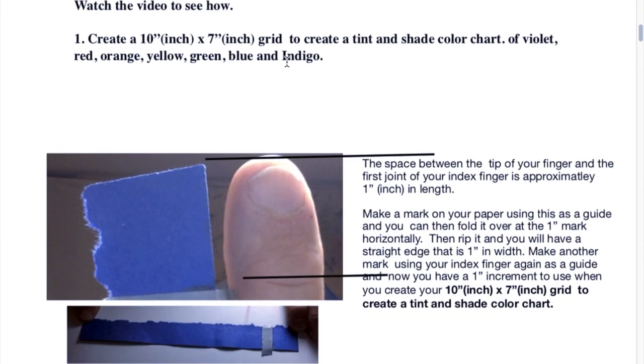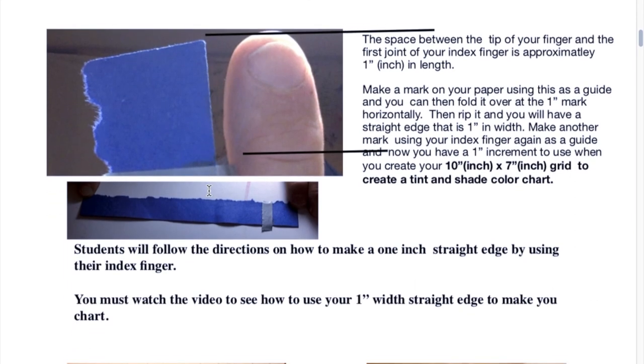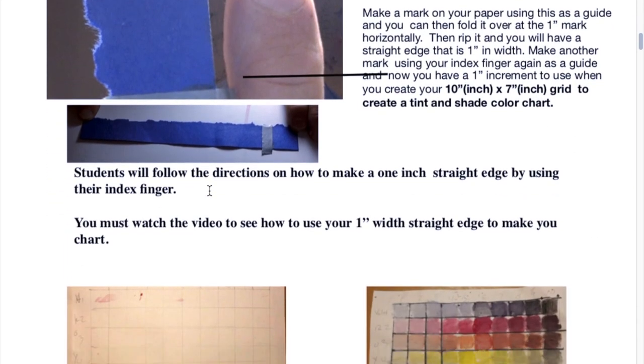You are going to watch the video to see how to do it. If you had a finger and you measured from here to here, you would probably get an inch. This dimension from here to here is about 1 inch. Then you will learn in the video how to rip your paper and measure to get this dimension.